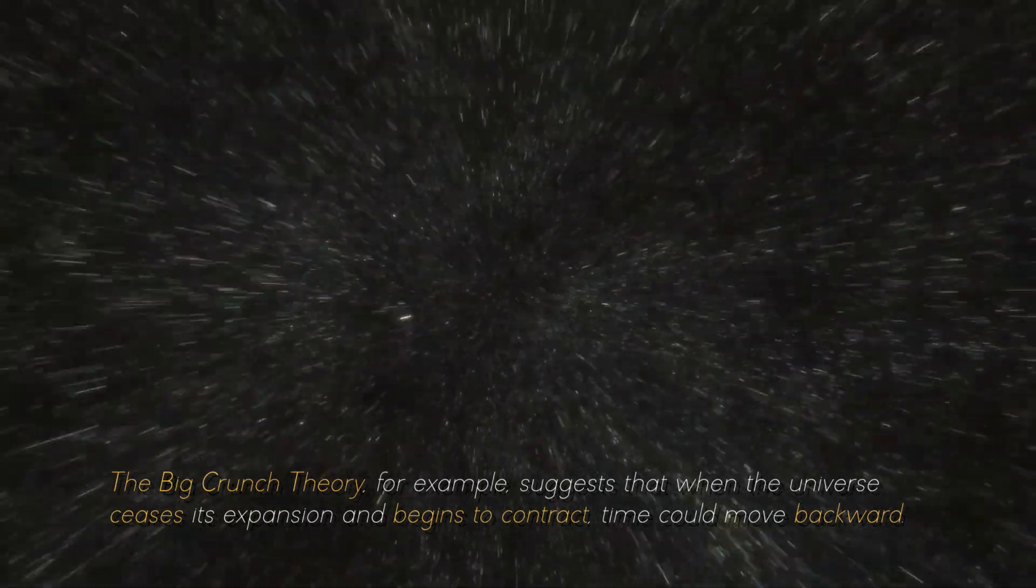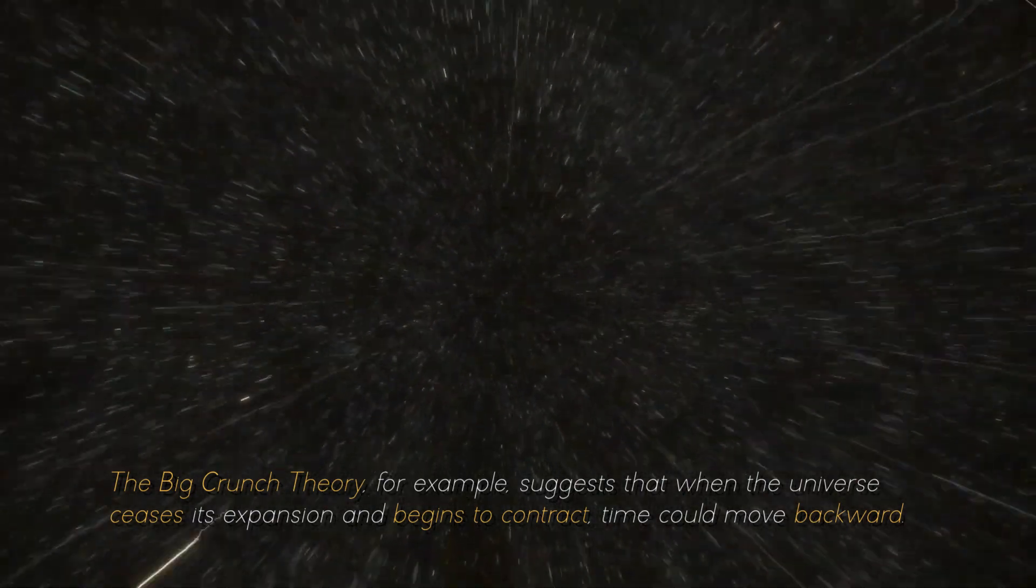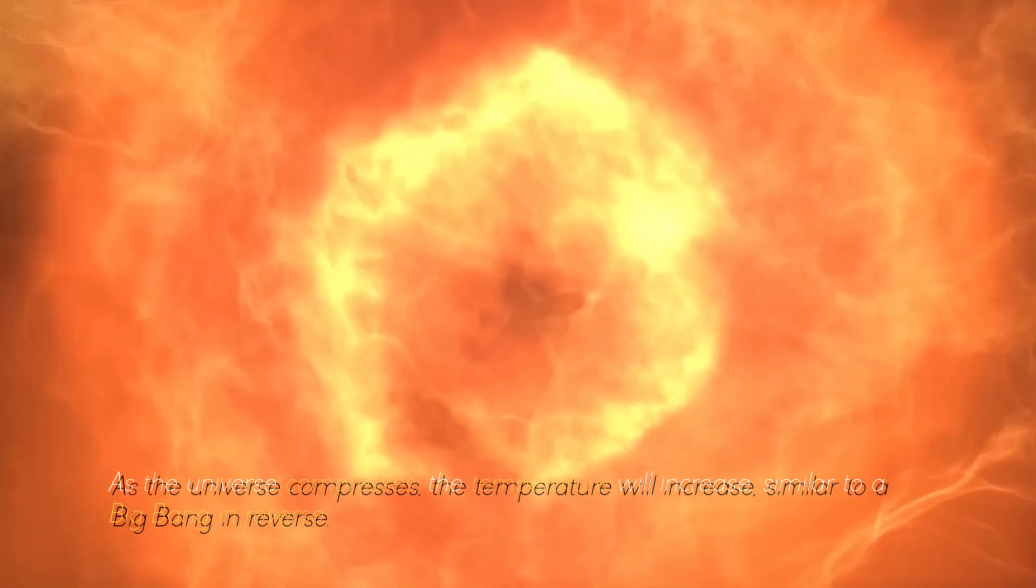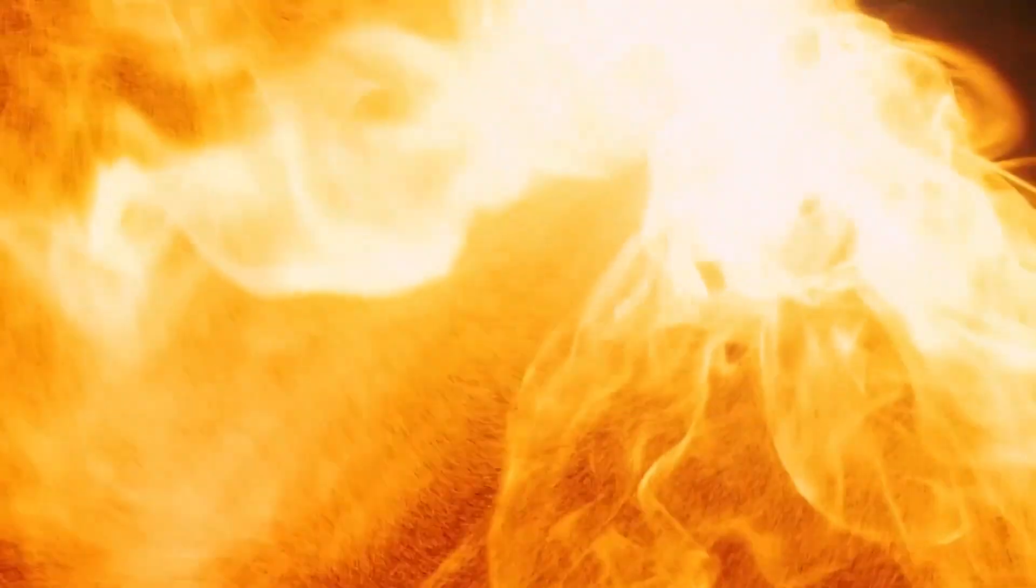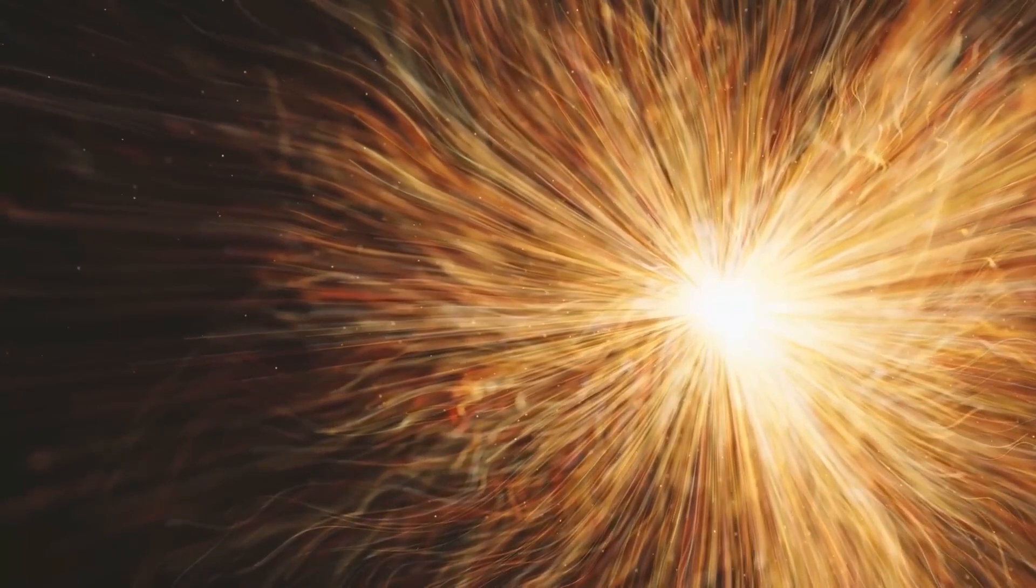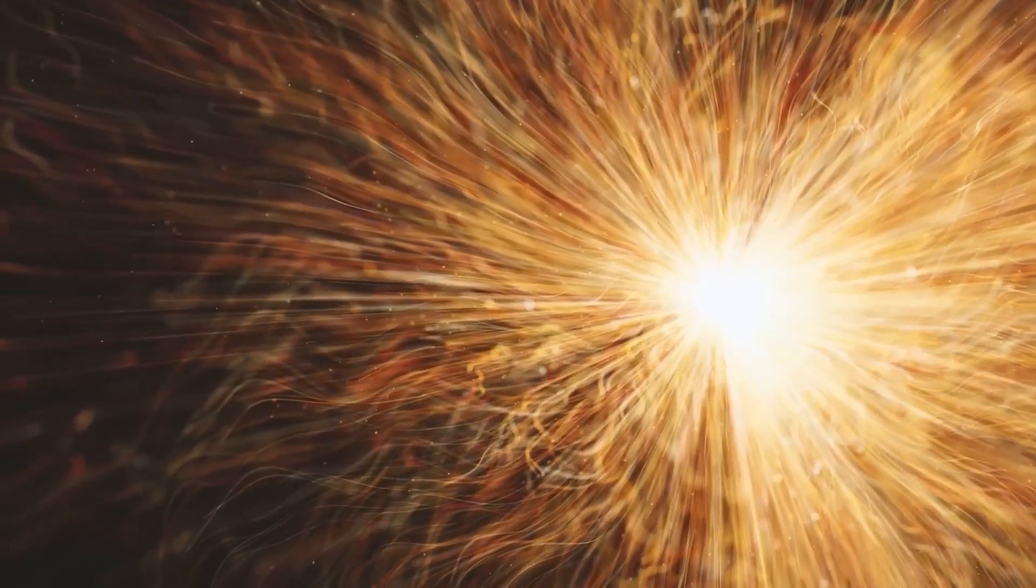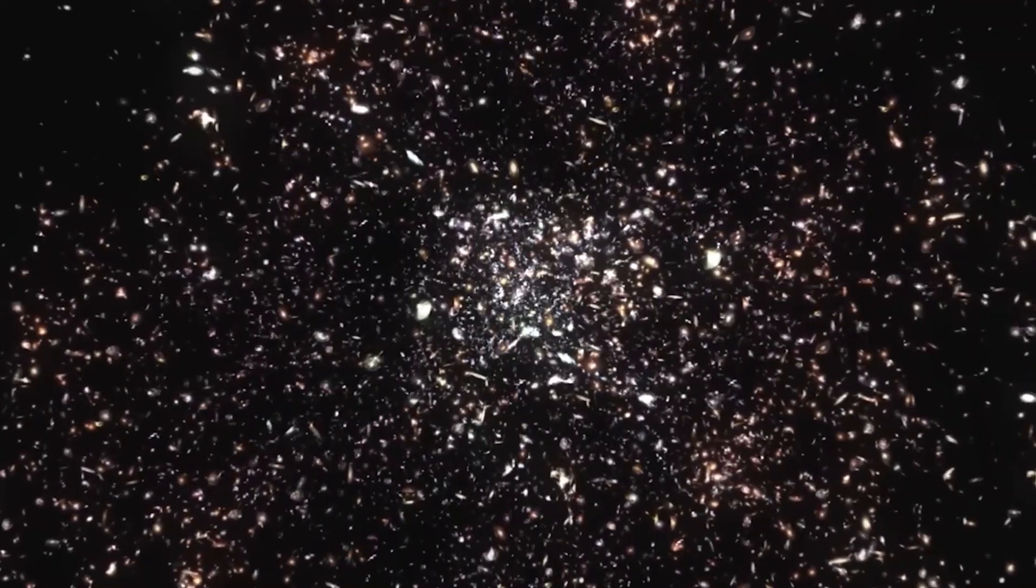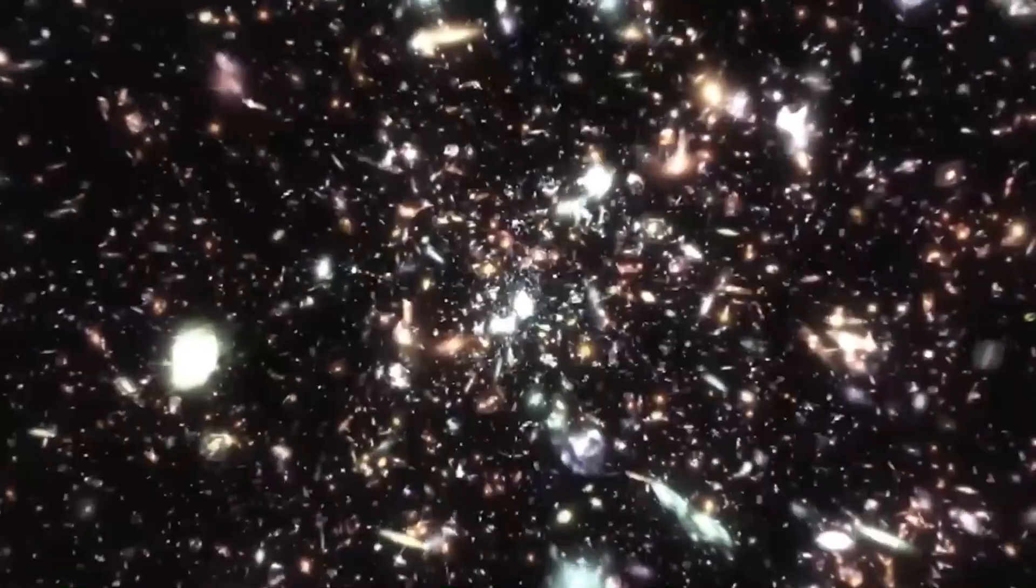The Big Crunch theory, for example, suggests that when the universe ceases its expansion and begins to contract, time could move backward. As the universe compresses, the temperature will increase, similar to a Big Bang in reverse. Now, what happens after the Big Crunch is a question that has puzzled many of us. Several theories raise the possibility that a new universe could arise from another Big Bang, while others suggest that our universe could reappear at another point, as if it were a cosmic bubble. There are even hypotheses that this cycle could repeat itself over and over again, giving rise to countless universes.